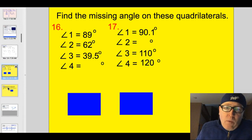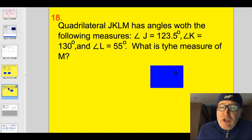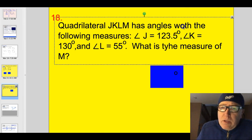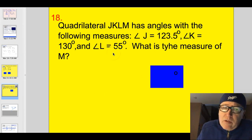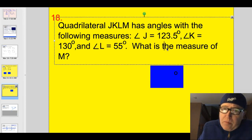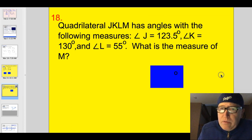All right. And we've got one more. Sometimes they just write it out in this long string like this in a sentence. We're going to be doing the same thing. It's just making them think. It's a little more complicated. Quadrilateral JKLM has angles with the following measures. Angle J is 123.5 degrees. Angle K is 130 degrees. Angle L is 55 degrees. What is the measure of M? Go ahead and do that one there.